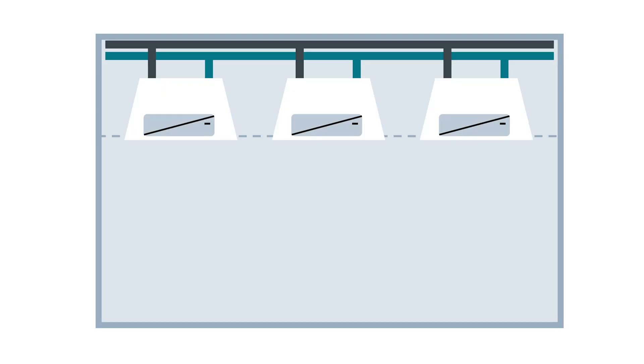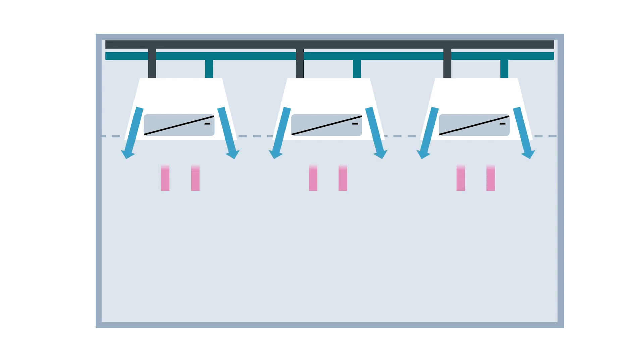The other type, active beam, is supplied by an air inlet coming from the main ventilation duct, which is used to induce air circulation in the room.